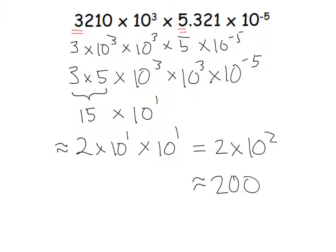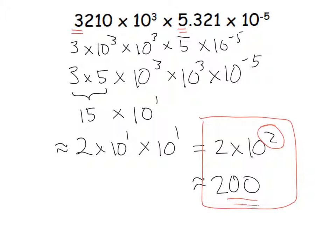This is not perfect, but gives a rough idea. Notice that we rounded 3,210 down and 5.321 down, yet when we got 15 we rounded up to 20. That kind of trade-off in rounding generally gives a fairly close answer. Our goal is to get the ballpark — knowing both the leading digit roughly and the power of tens. So getting 2 times 10 squared tells us we're in the hundreds, probably around 200. Let's look at three more examples.